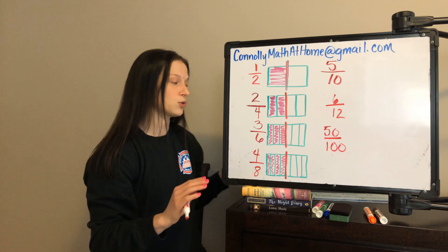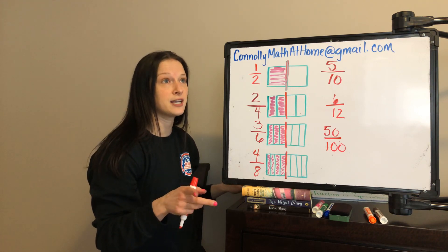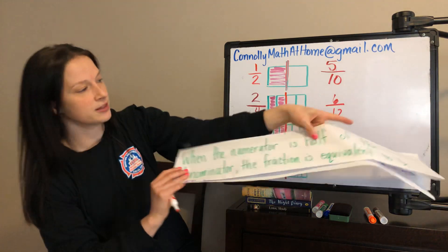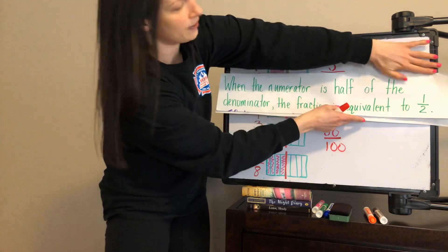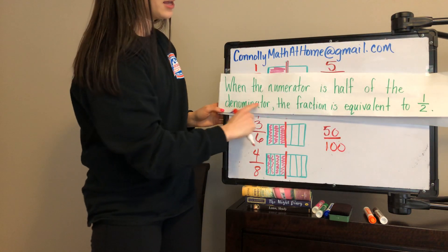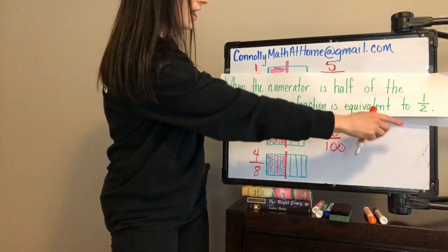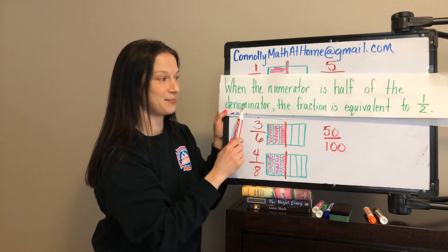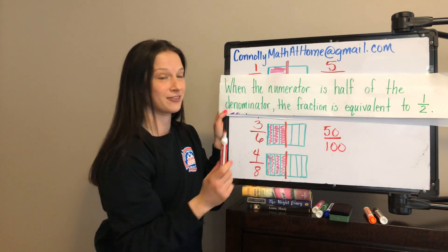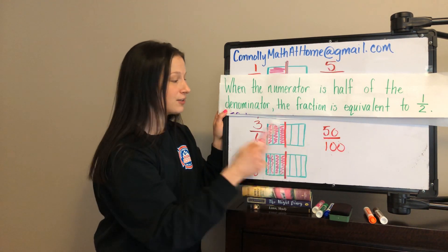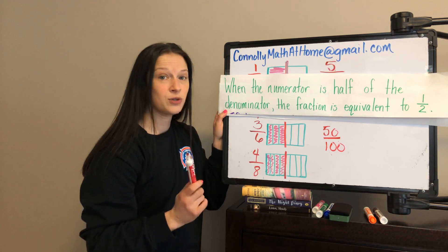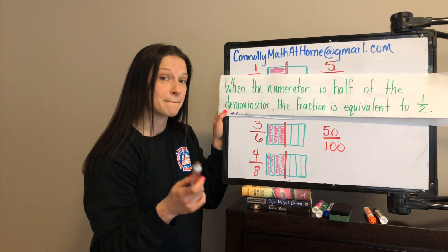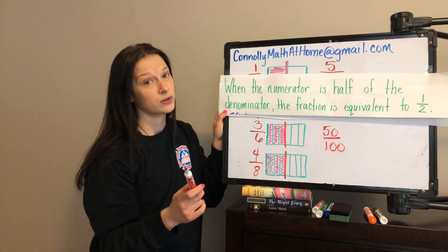So if you've been writing down your conjectures in a notebook like I suggested, here we are with the first part: when the numerator is half of the denominator, the fraction is equivalent to 1 half. When the numerator is half of the denominator, the fraction is equivalent to 1 half. Examples: 4/8, 50/100, 3/6 — all those numerators are half of the denominator. So when you see that, you know a fraction is equal to 1 half.